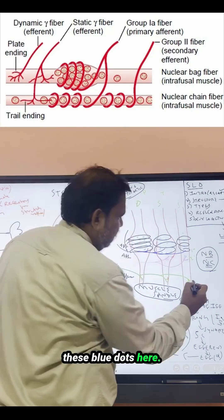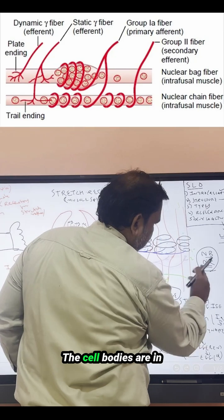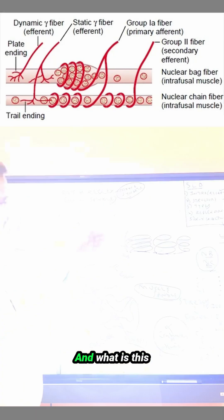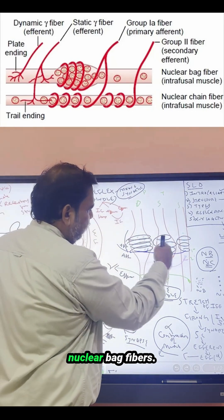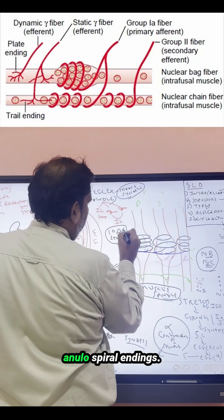And again you see these blue dots here. So in the nuclear bag fibers, the cell bodies are in clusters, whereas in the nuclear chain fibers, it is forming a chain like this. And what is this spiral, black color? It is spiraling the nuclear bag fibers, it is spiraling the nuclear chain fibers. This is called primary annulus spiral endings.